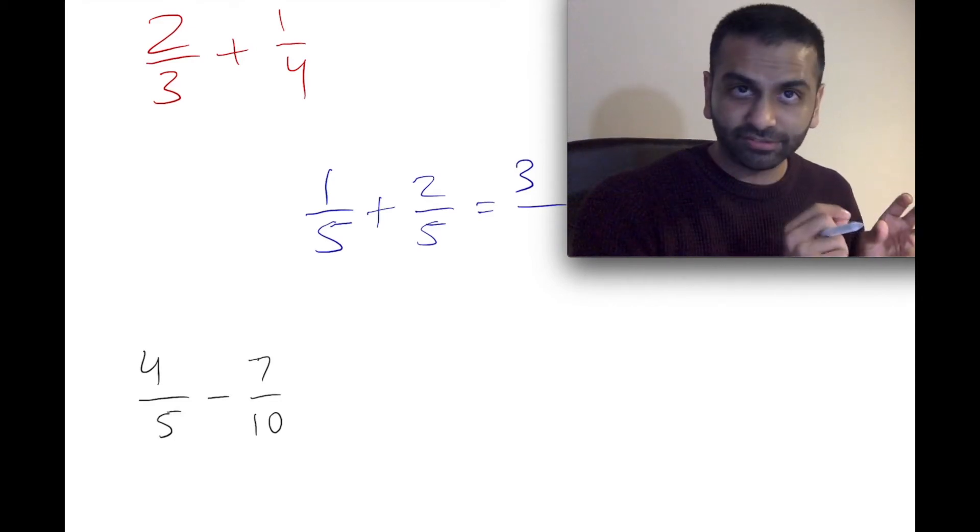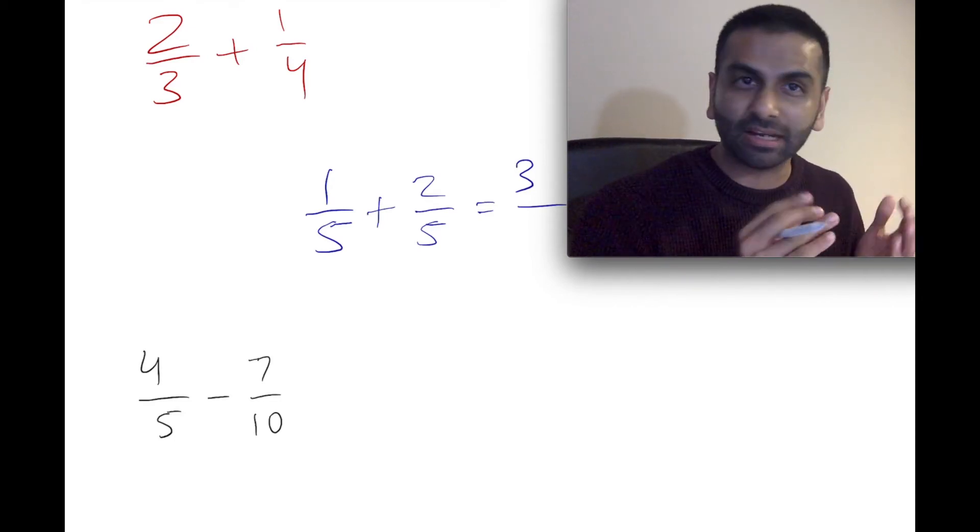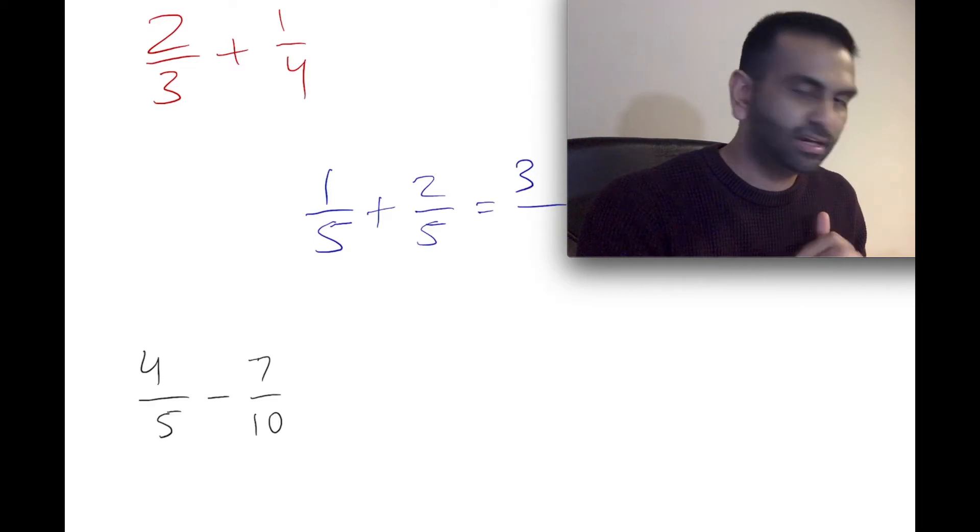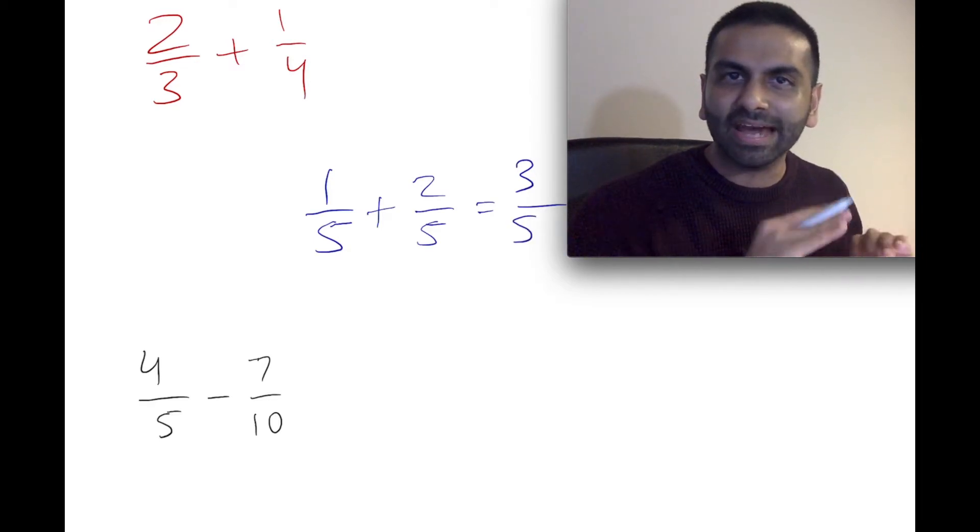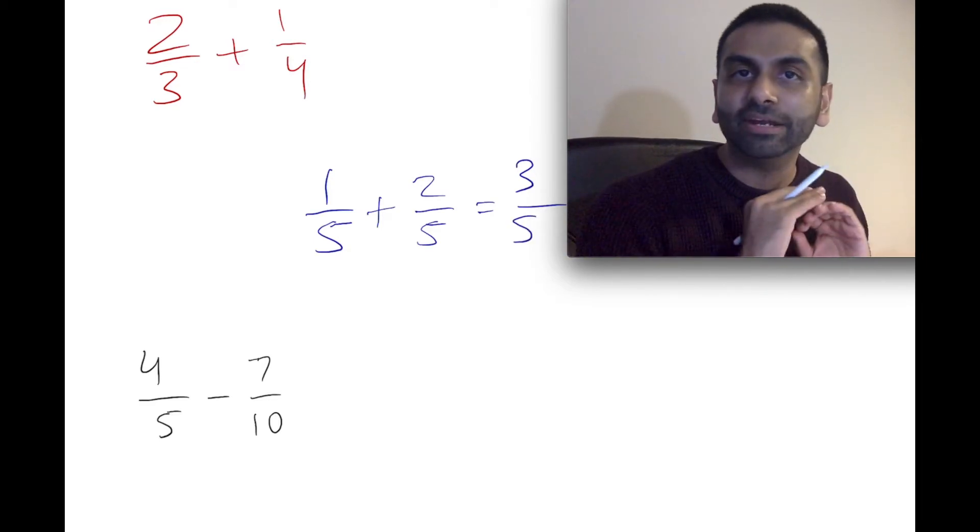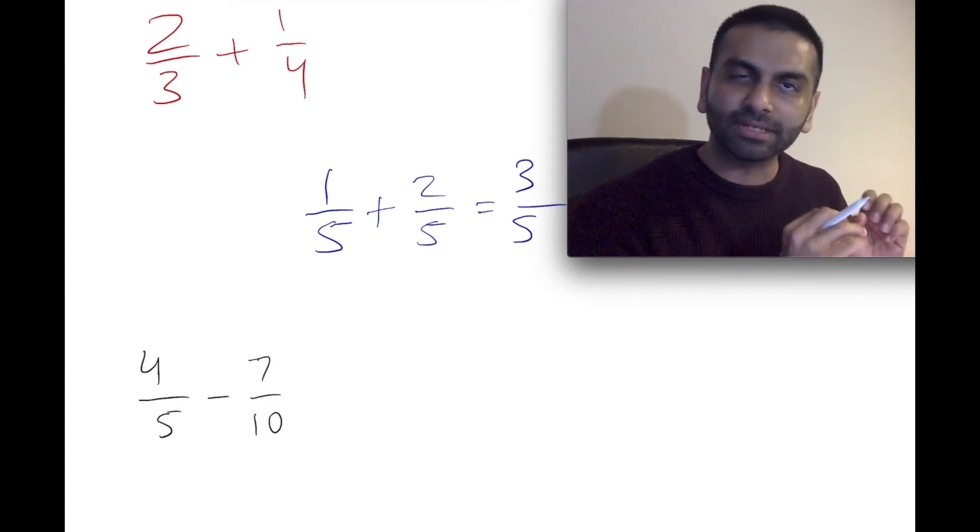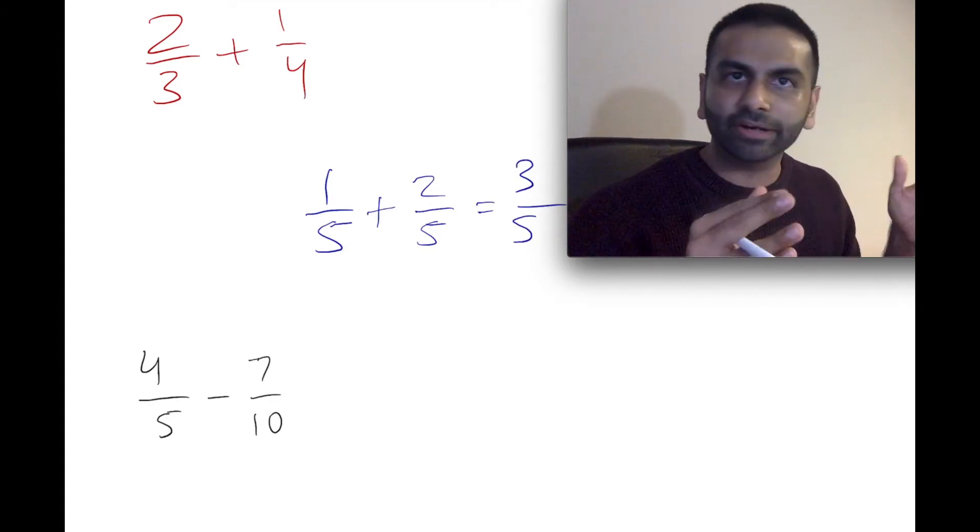And the denominators, they're the same, but you don't add them. So it's not going to be ten on the bottom, but just five. That's just the procedure of how you add fractions when the denominators are already the same. Get the denominator the same, add the numerators, then you're done.